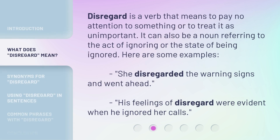Disregard is a verb that means to pay no attention to something or to treat it as unimportant. It can also be a noun referring to the act of ignoring or the state of being ignored. Here are some examples: She disregarded the warning signs and went ahead. His feelings of disregard were evident when he ignored her calls.